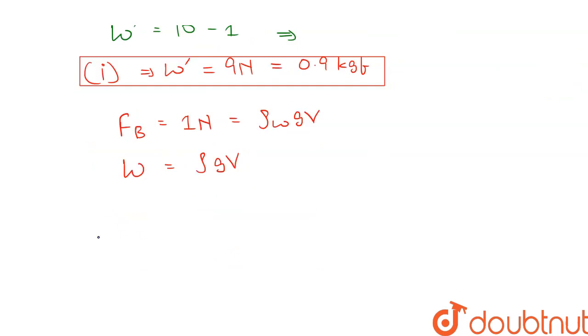Now if we divide W by FB, we get ρ g V divided by ρw into g into V. Dividing g V, we get ρ by ρw, which is equal to the relative density RD.